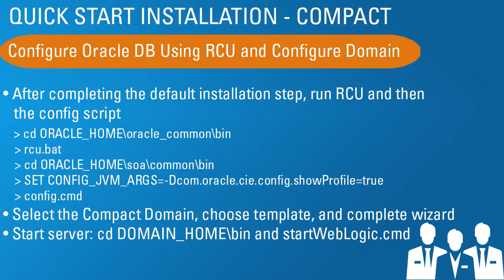The first part of the dialogue that comes up asks what kind of domain you want to create. Select compact domain, then choose your template — a list of templates appears on the next page and you pick BPM and whatever else you want. When you've completed the wizard, start your server the same way as the standalone option: go into your domain home bin, start the WebLogic server, and wait for the final message that says the server is accepting requests.